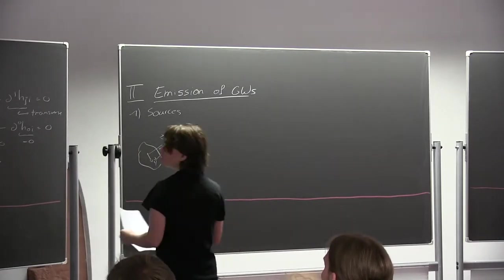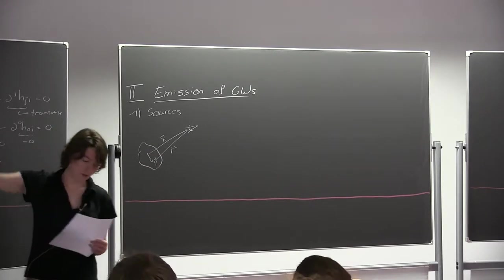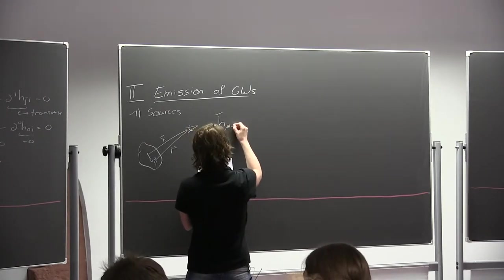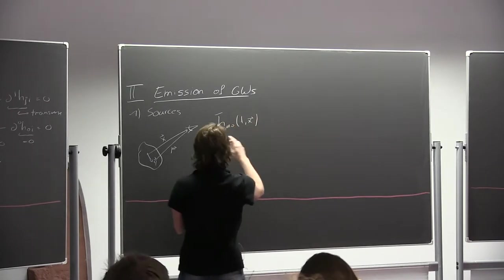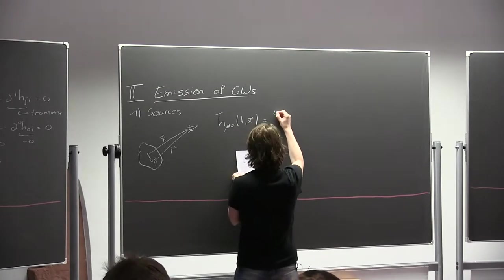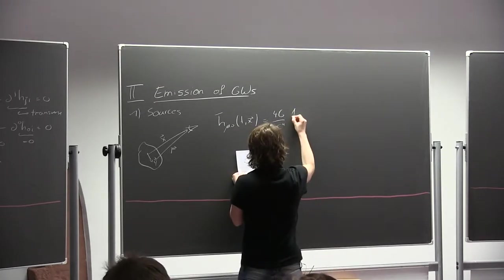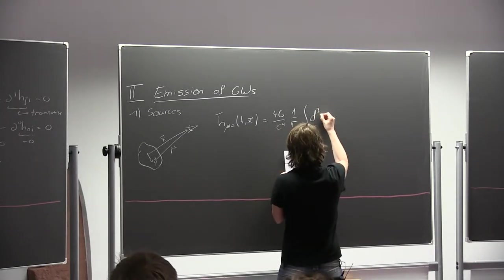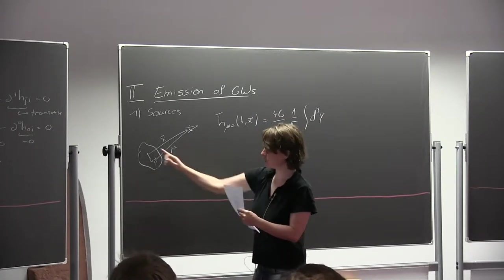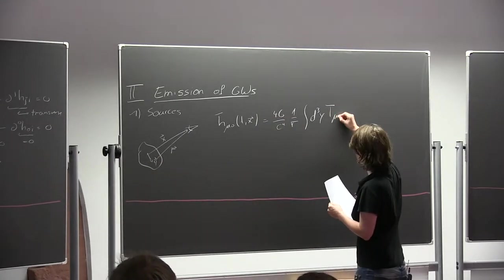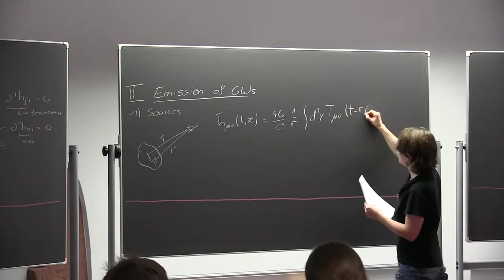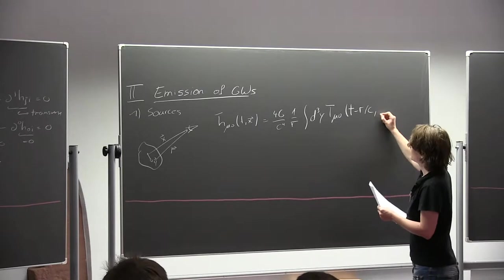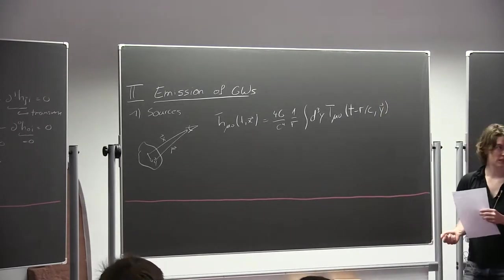We're interested in what the observer sees from the source in terms of gravitational waves, so we use the wave equation. Exactly as in electrodynamics, we can invert this equation: the observer at position x, at distance r, sees gravitational waves emitted from all points y in the source at the retarded time — observed at time t, emitted at time t minus r over c.